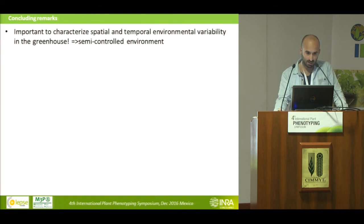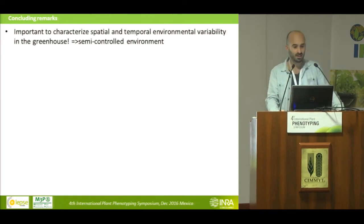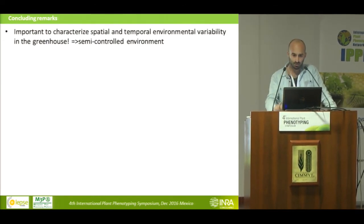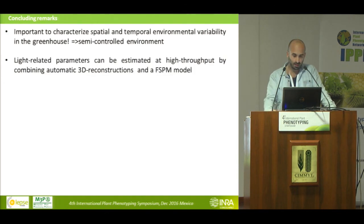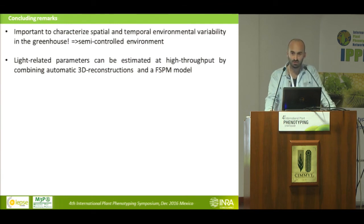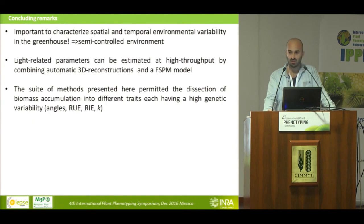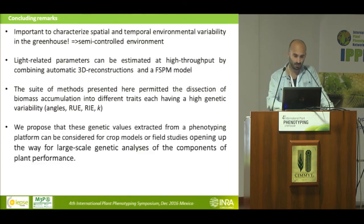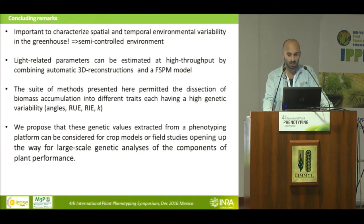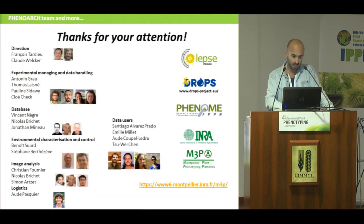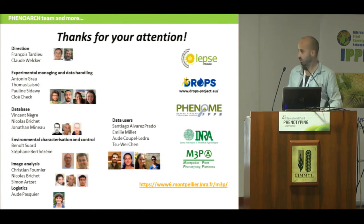In conclusion, it is important to characterize spatial and temporal environmental variability in the greenhouse, as it is a semi-controlled environment. Light-related parameters can be estimated at high throughput by combining 3D reconstruction with a functional-structural plant model. The presented methods permit dissection of biomass accumulation into distinct traits each having genetic variability, and these genetic values extracted from a phenotyping platform can be used for crop models and field studies, opening the way for large-scale genetic analysis of plant performance components.